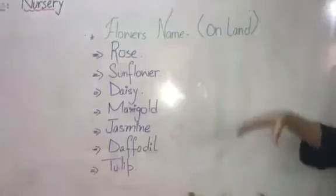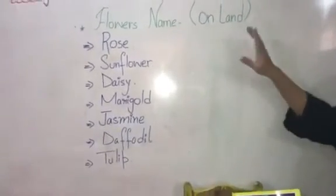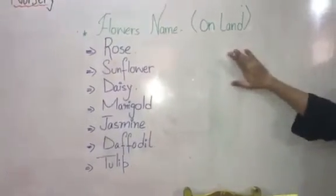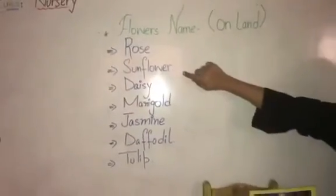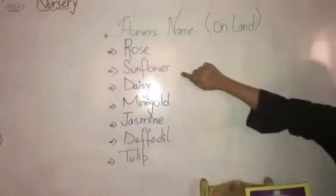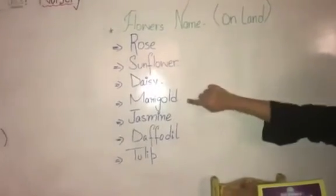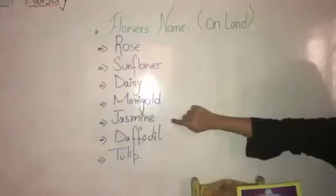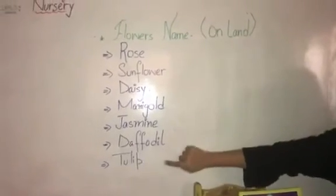Now, if you have flowers, you can see flowers on land. Flowers like rose, sunflower, daisy, marigold, jasmine, daffodil, and tulip.